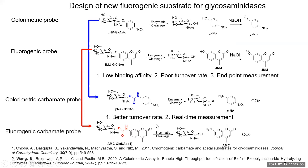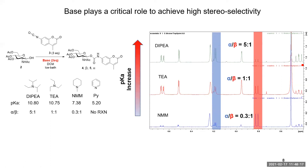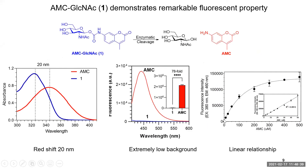That is the design strategy for this compound. To make the AMC glucoside, the synthesis is straightforward, but the challenge is how to achieve high stereoselectivity. We want the beta isomer, so we screened many different conditions including base and temperature. We found that the base plays a really critical role — as the pKa increases, the alpha selectivity increases. Finally, we chose specific conditions to give the beta isomer as the major product.